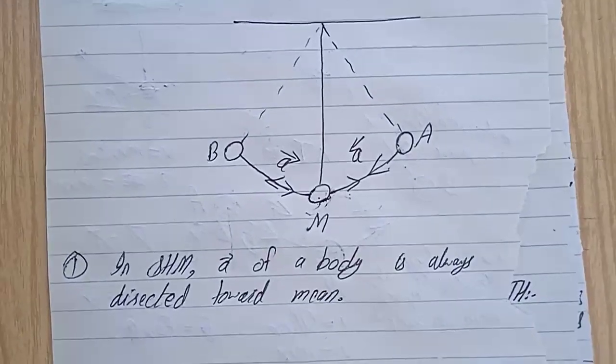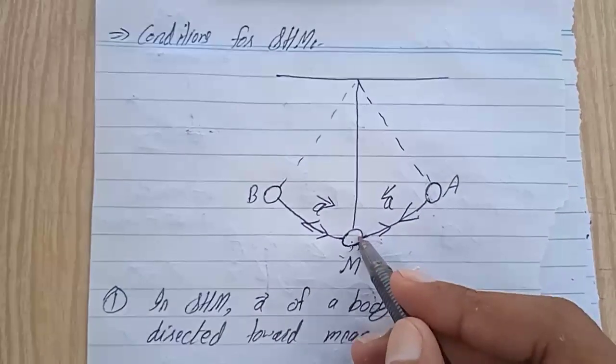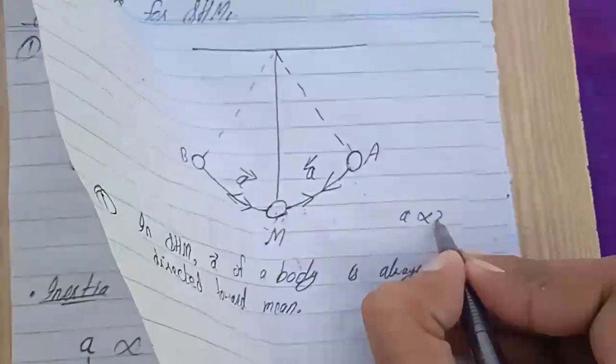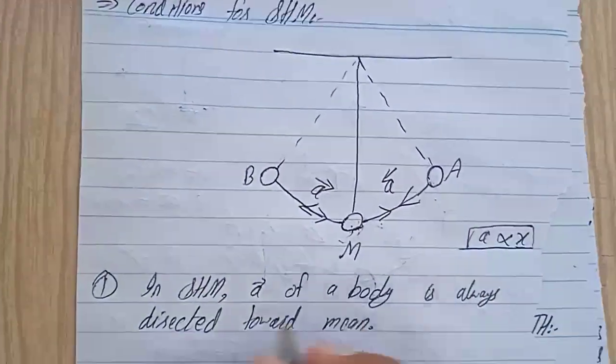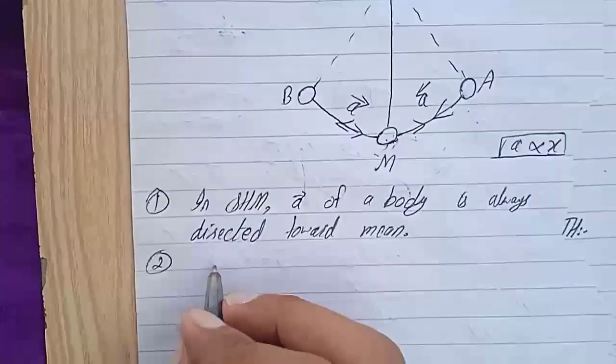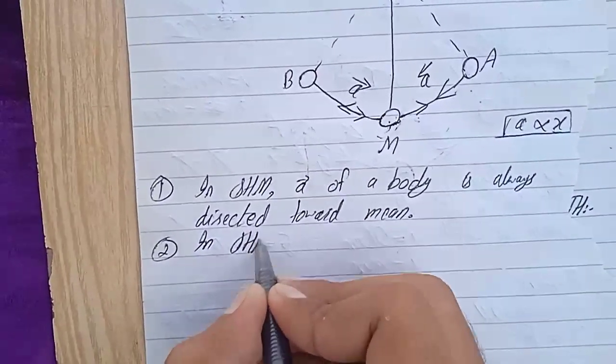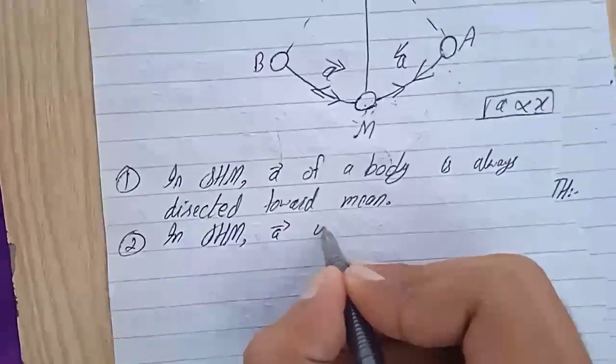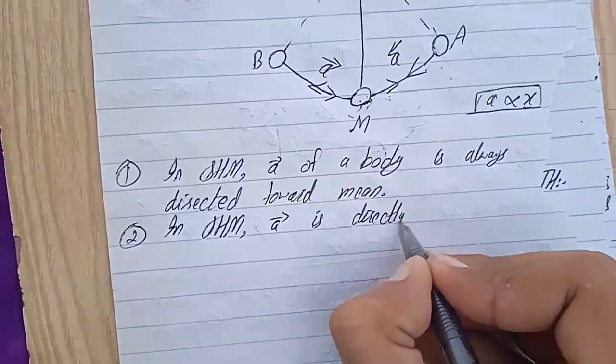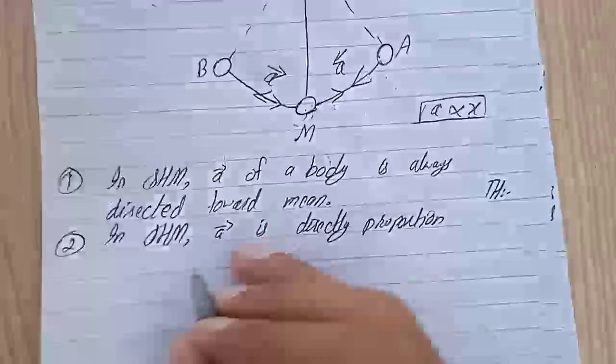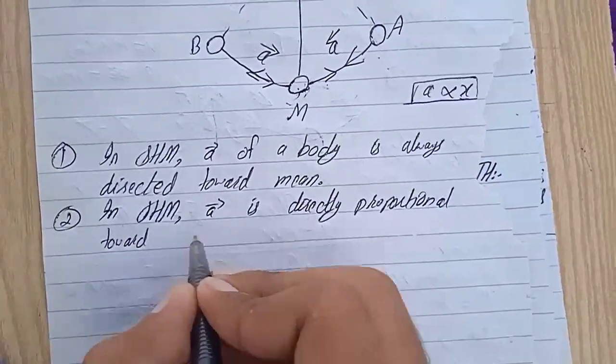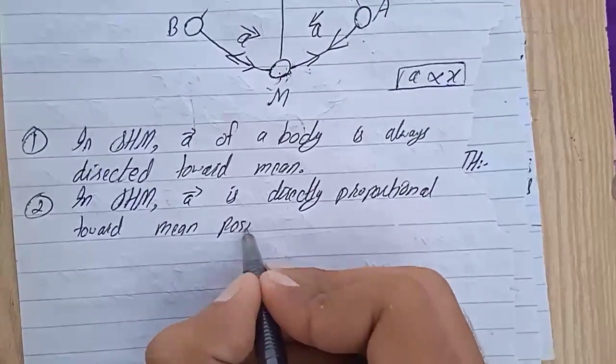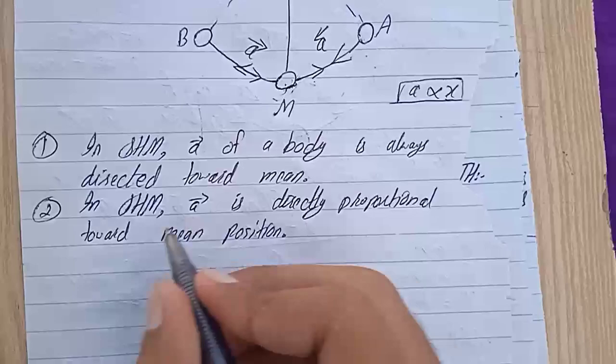The second condition is that we have seen that the acceleration is directly proportional to the distance from mean position. x is the distance from mean position. We have seen the relation, so this relation comes from condition 2. In SHM, acceleration is directly proportional to distance from mean position.